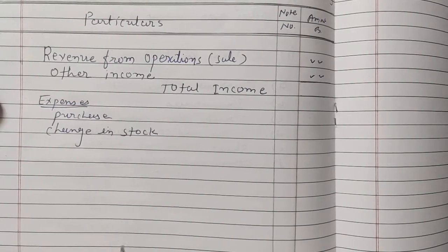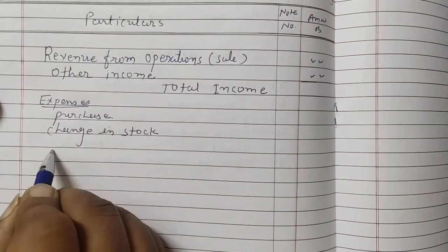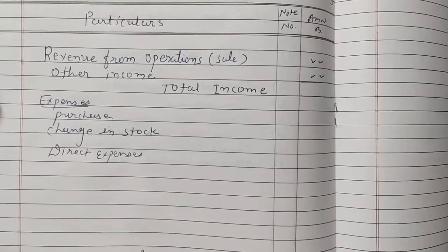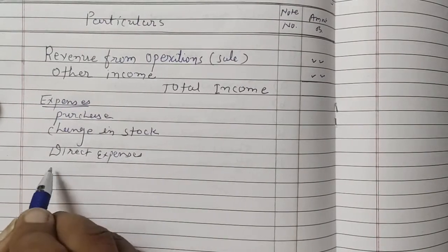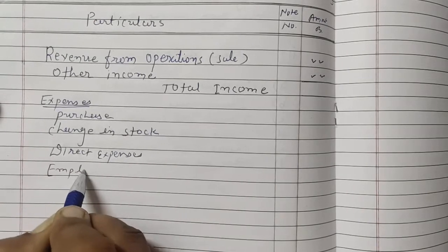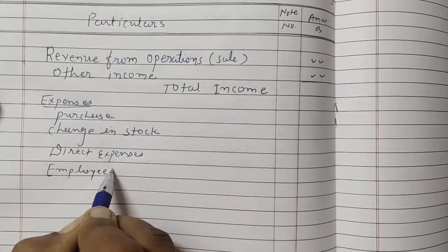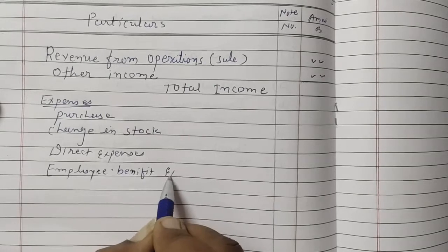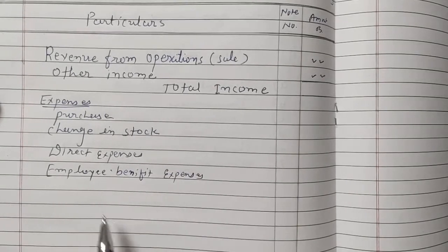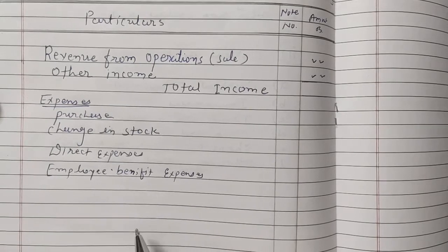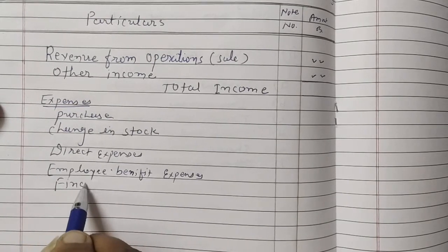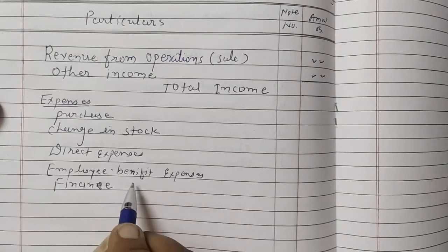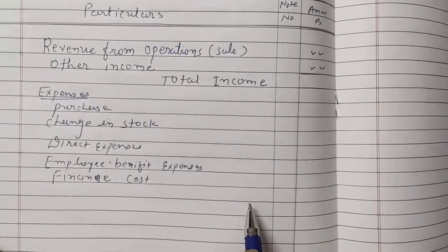Then we have Direct Expenses. After that, Employee Benefit Expense — this covers all employee-related costs. Then Finance Cost, meaning financial expenses.